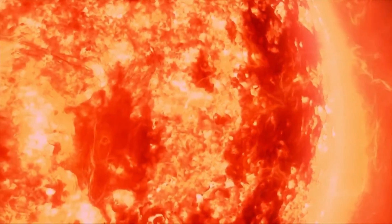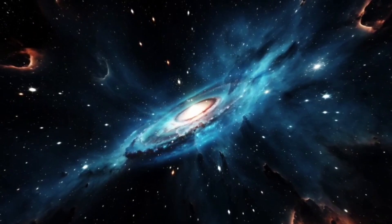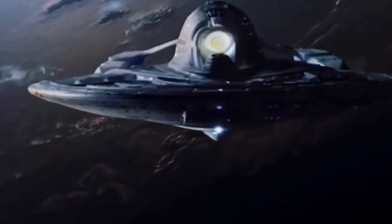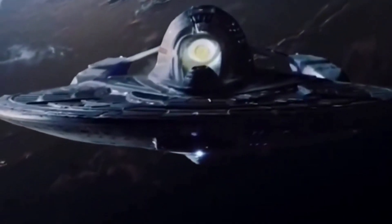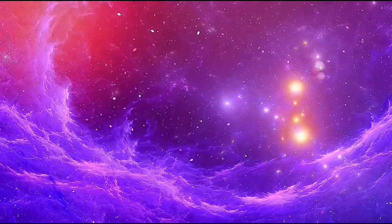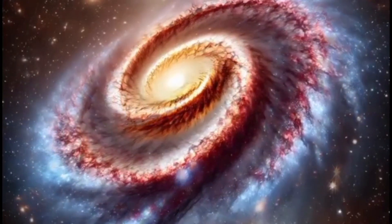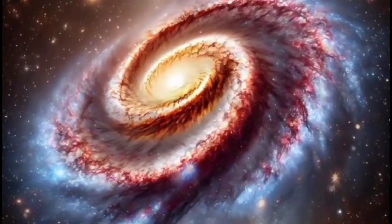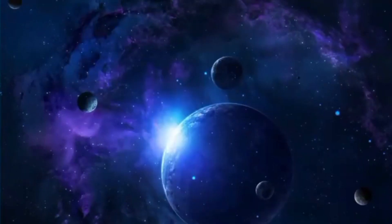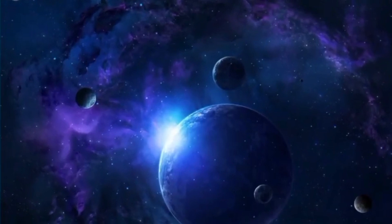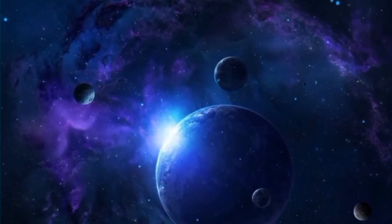Betelgeuse, a red star, loses about one solar mass every 10,000 years as material is ejected unevenly from the star in all directions, resulting in a nebula surrounding the red star. The nebula surrounding Betelgeuse is roughly 30 astronomical units, or 30 times the distance between the sun and Earth, and is 250 times larger than the star itself at its center.